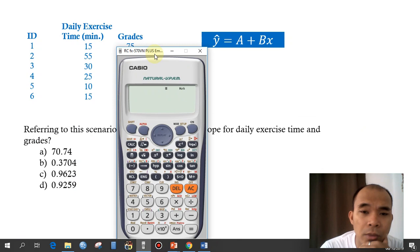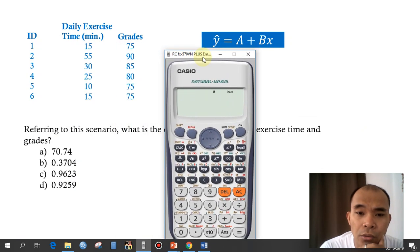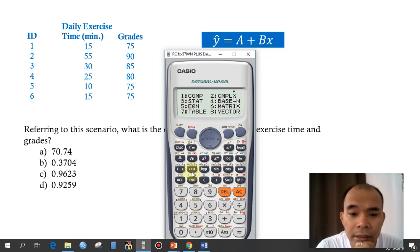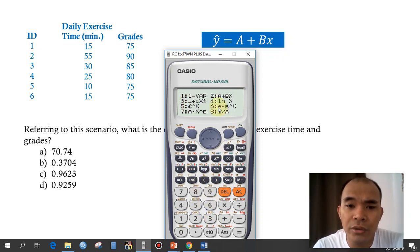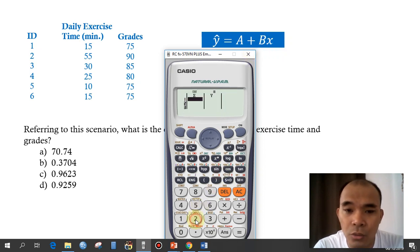How are we going to solve this one? Go to the mode and then 3, start. Okay, and then you go to this one, a plus bx, so 2.